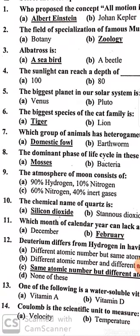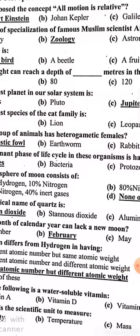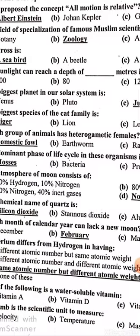There is no hydrogen and nitrogen on the moon. The chemical name of quartz is silicon dioxide. Which month of the calendar year can lack a new moon? February, because February has only 28 days while a lunar calendar month has 29-30 days.